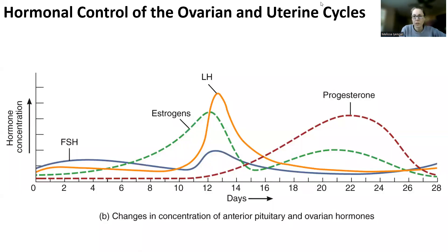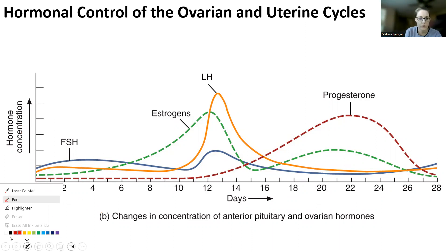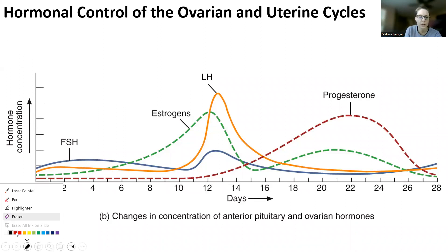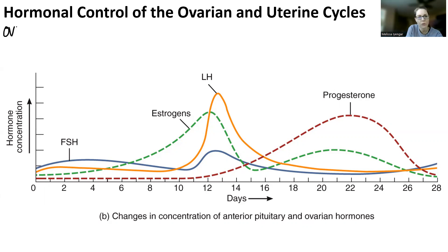This is the last way I'm going to go over these two cycles together — by looking at what's happening to hormones over time and creating a list of events. I've done this a couple different ways for different students in office hours. Let's go over what's happening in the ovarian cycle and what's happening in the uterine cycle.